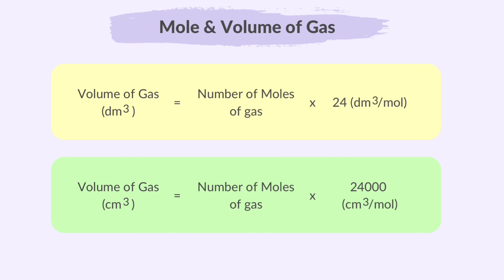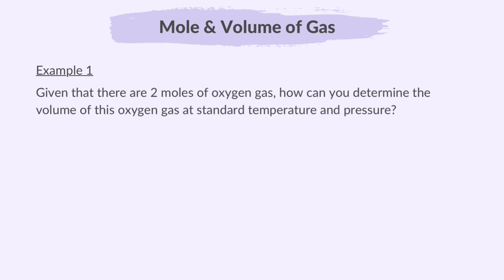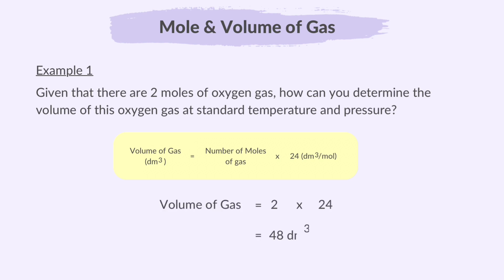Let's go through an example. Given that there are 2 moles of oxygen gas, how can you determine the volume of this oxygen gas at standard RTP? This is pretty straightforward — we use the volume of gas formula. There are 2 moles of oxygen gas, so we substitute it into the formula and find the volume: 2 × 24 = 48 dm³.